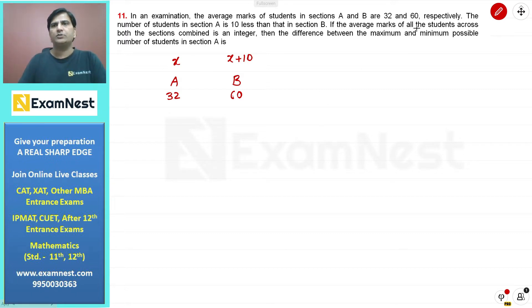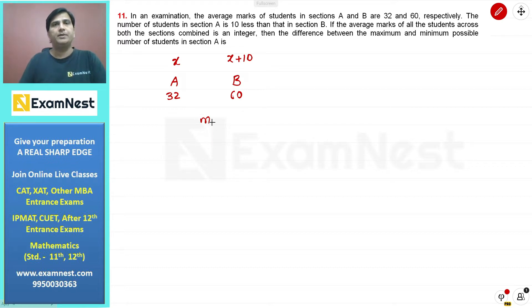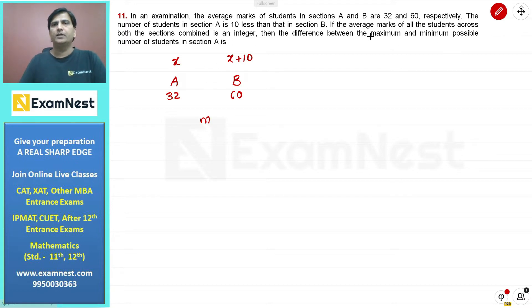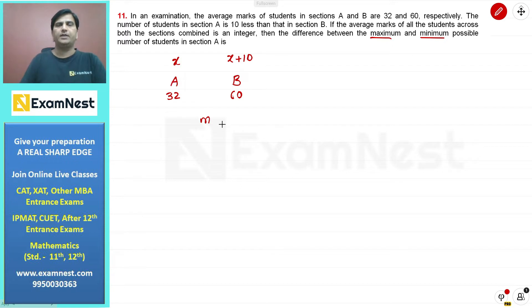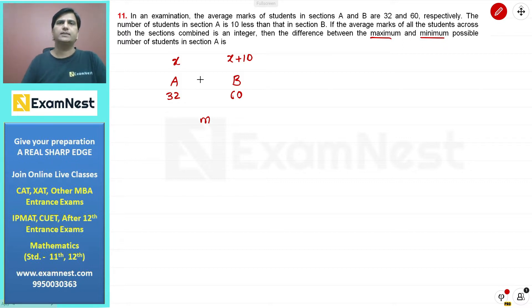If the average marks of all the students across both sections combined is an integer M, and x is definitely a natural number because the number of students cannot be negative, then we need to find the difference between the maximum and minimum possible number of students in Section A.